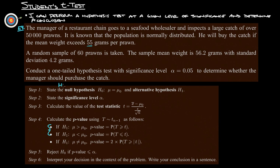Our null hypothesis H₀ in this case is going to be that the mean weight is 55 grams per prawn. And then our alternative hypothesis H₁ is going to be that the mean weight is more than 55 grams per prawn because that's when we want to buy the catch.